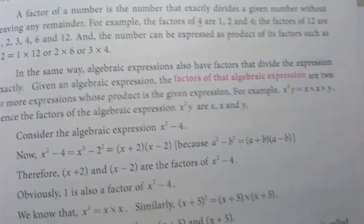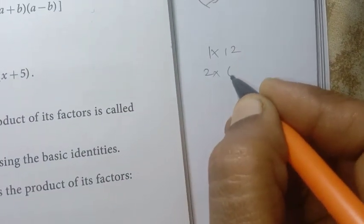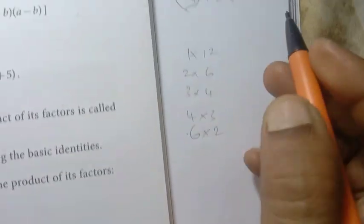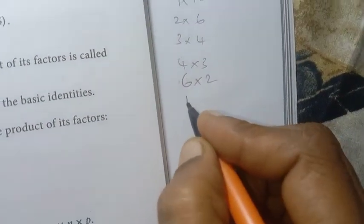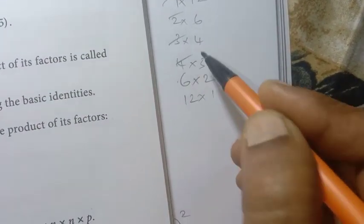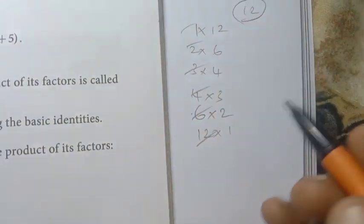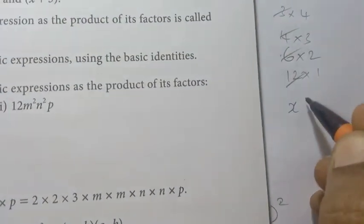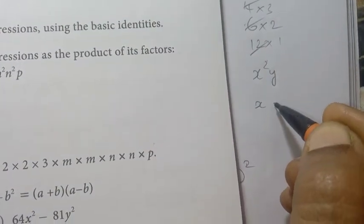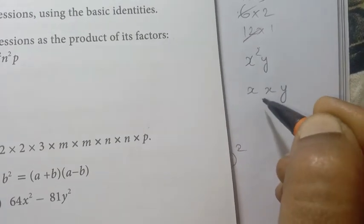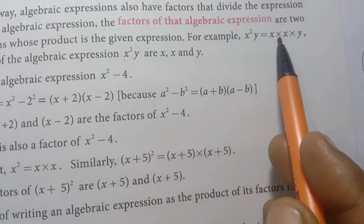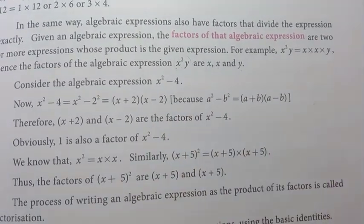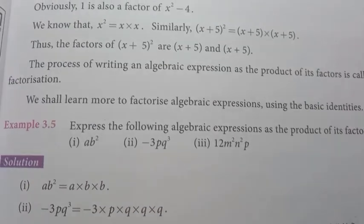For algebraic expressions, all the parts are factors. For x squared y: x squared y equals x into x into y. So the factors are x, x, and y. Similarly, a b squared equals a into b into b, so the factors are a, b, and b. For minus 3p q cubed: the factors are minus 3, p, q, q, q. For 12 m squared n squared p: we break 12 as 2 into 2 into 3, and m squared as m into m, n squared as n into n. So the individual numbers and variables are all the factors.